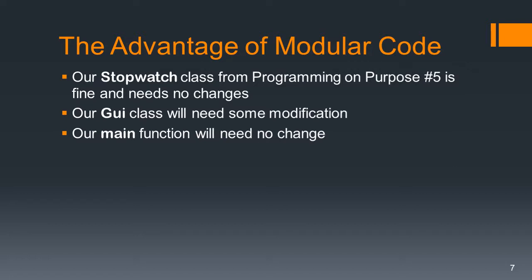Here's a big advantage of writing modular code. It's going to turn out that our stopwatch class from Programming on Purpose number five is fine and needs no changes. We are going to have to modify our GUI class, but the main function will also be fine and will need no change. So all we have to do is modify the GUI class.